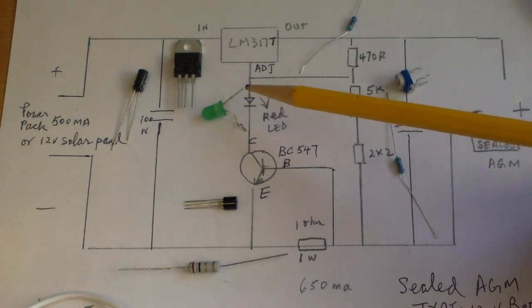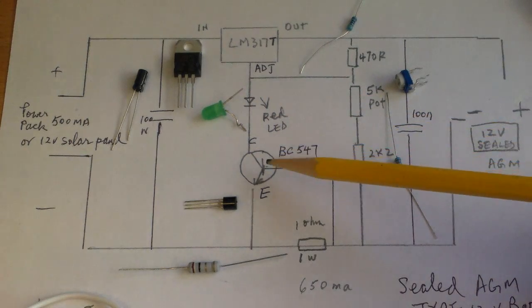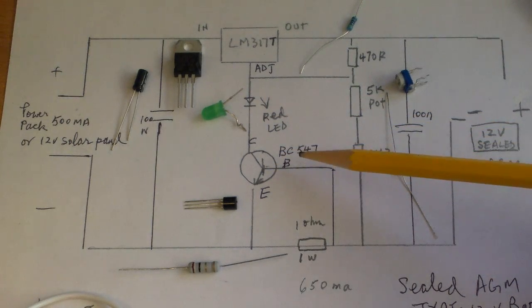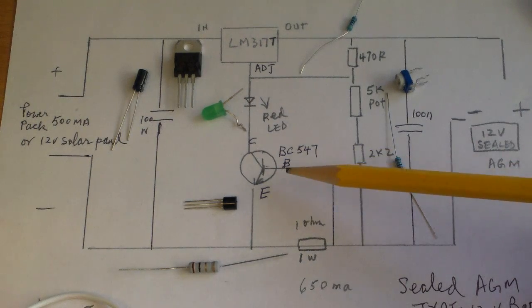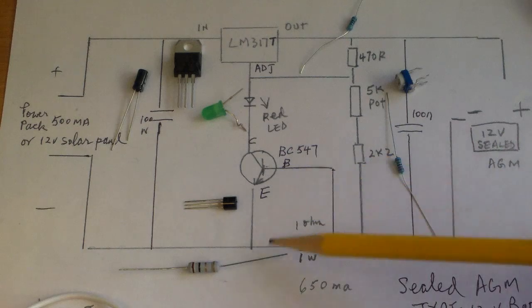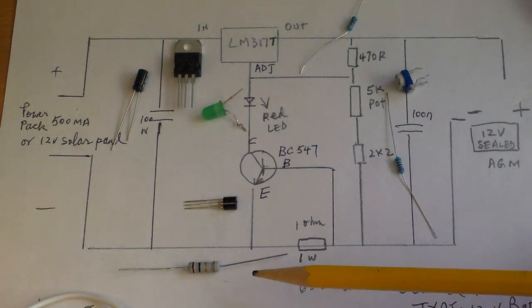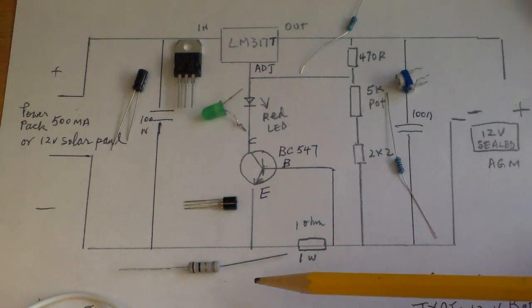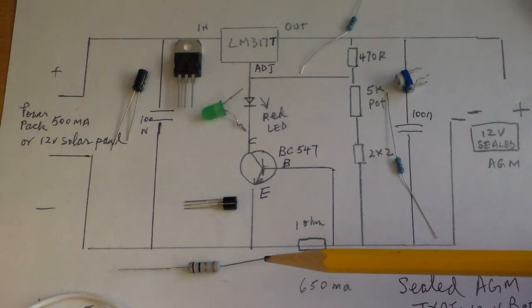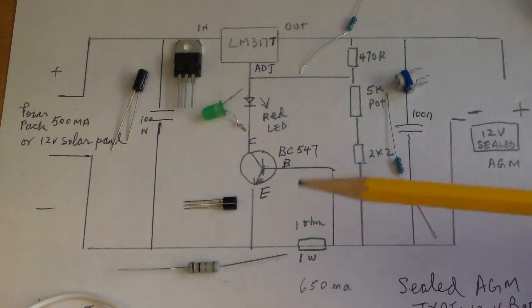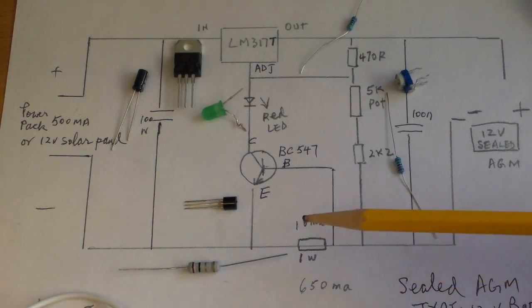And then you have here a BC547 transistor which I have plenty of, and I have a 1 ohm resistor here, 1 watt. Depending on what charging current you want, you can change the resistance of the 1 watt resistor.